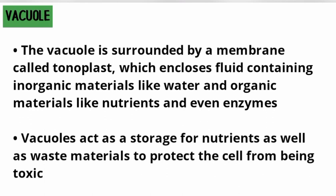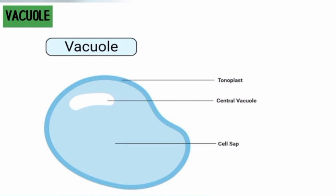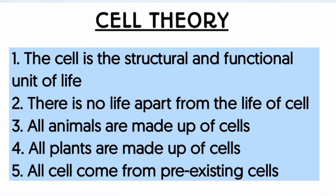The vacuole is the storage tank of the cell — a storage center for nutrients, waste products, and everything present in the cell. It has a membrane called the tonoplast, which is the membrane of the vacuole — an important exam point. The vacuole contains materials for the cell including food, waste products, and cell sap in plant cells.